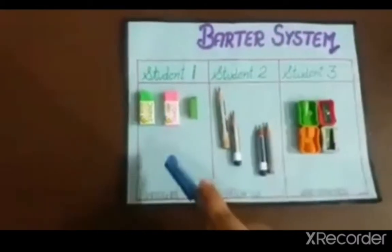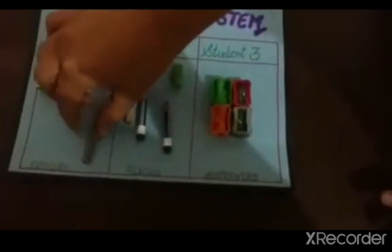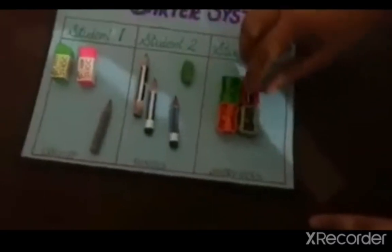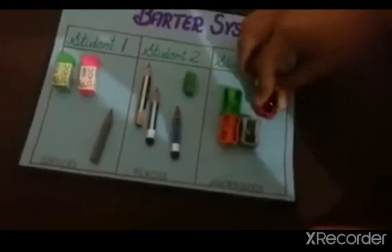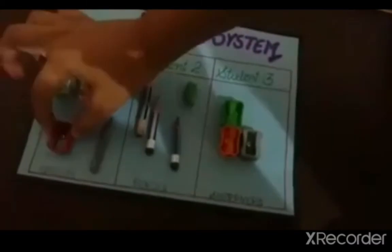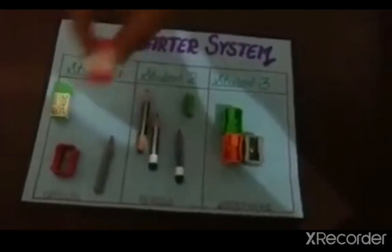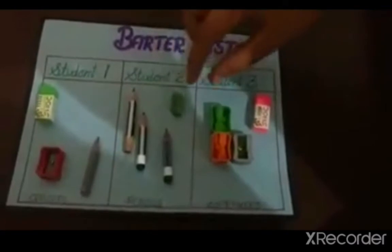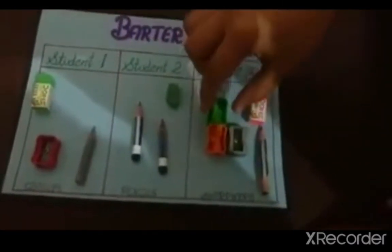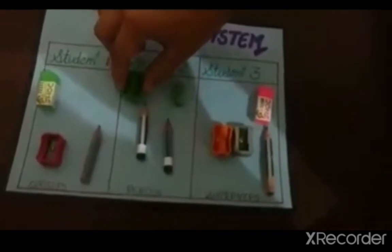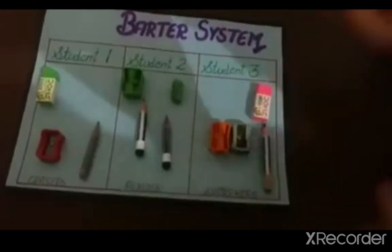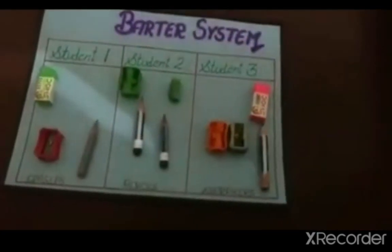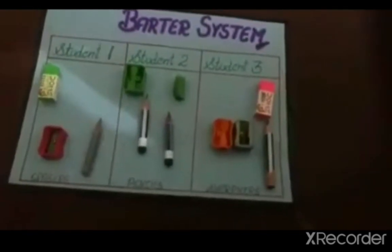So, Student 1 gave one eraser to Student 2 and took one pencil in exchange. Student 3 took one eraser in exchange. Student 2 gave one pencil to Student 3 and took one eraser in exchange. In this way, they exchanged their things according to their needs.